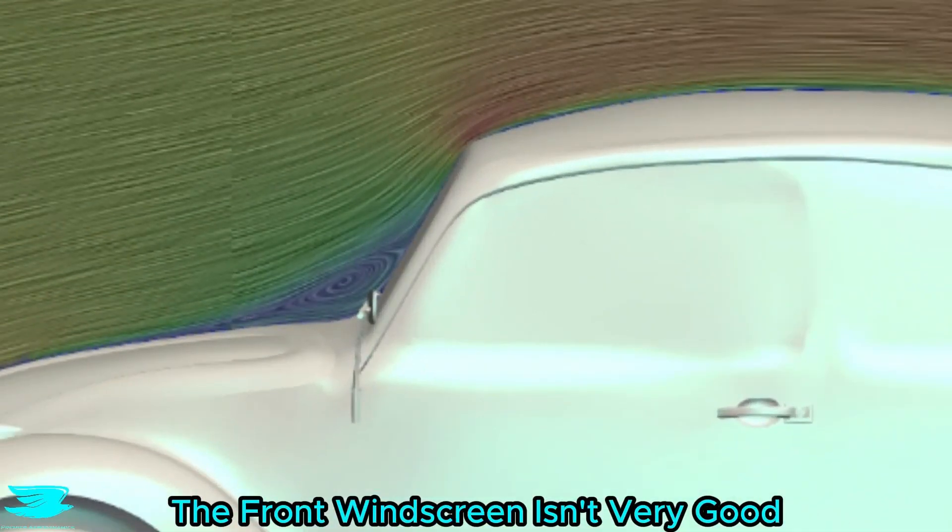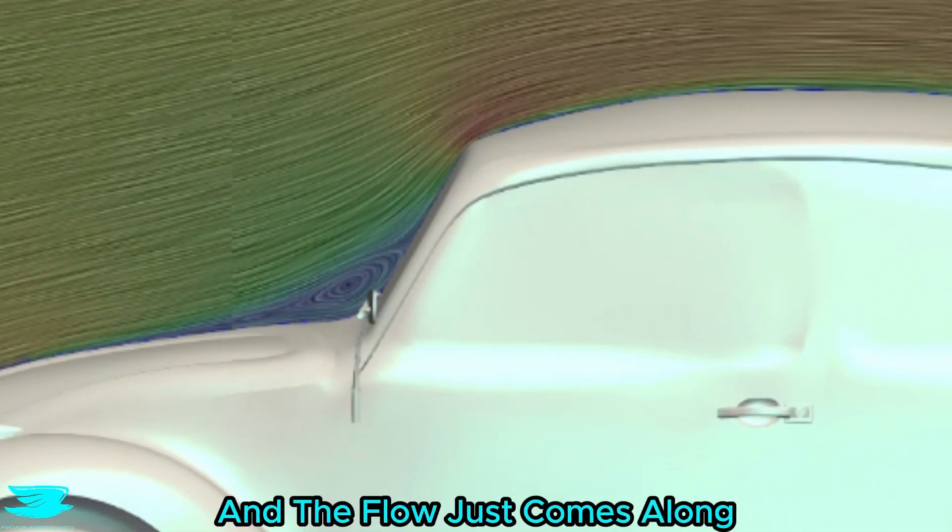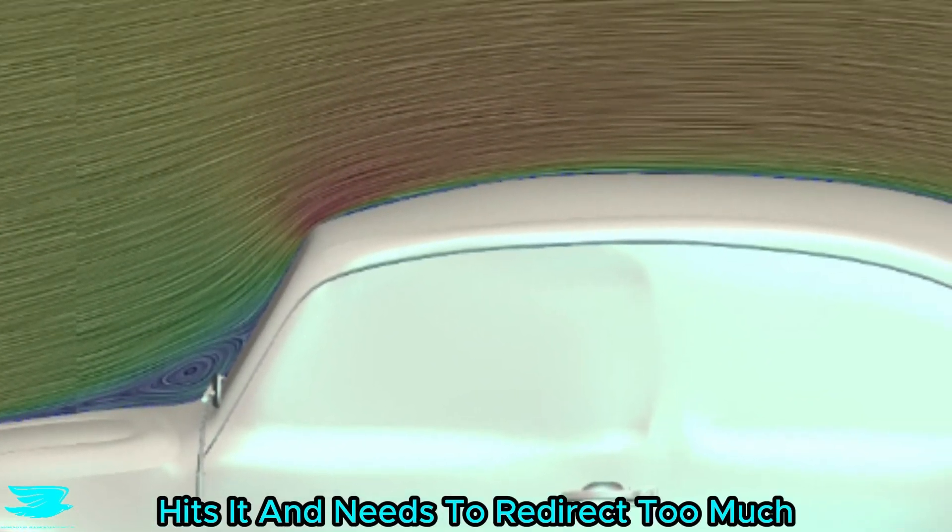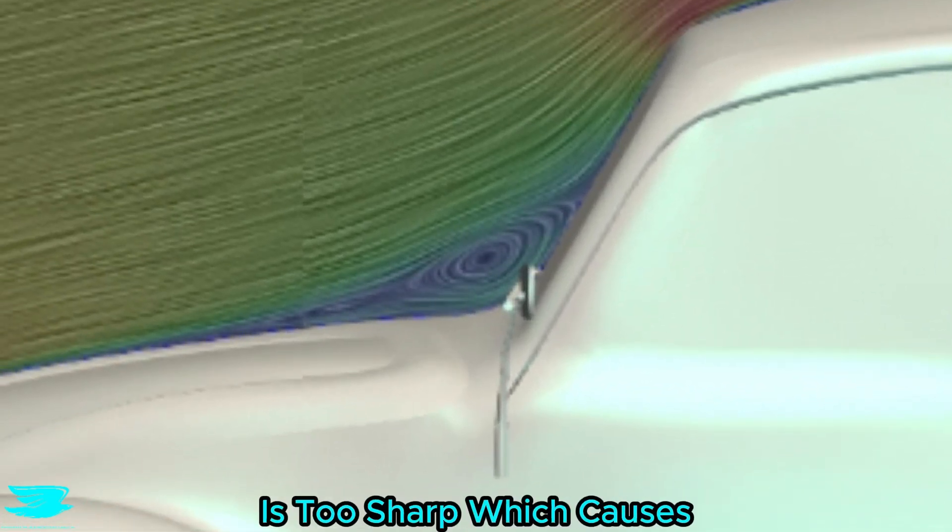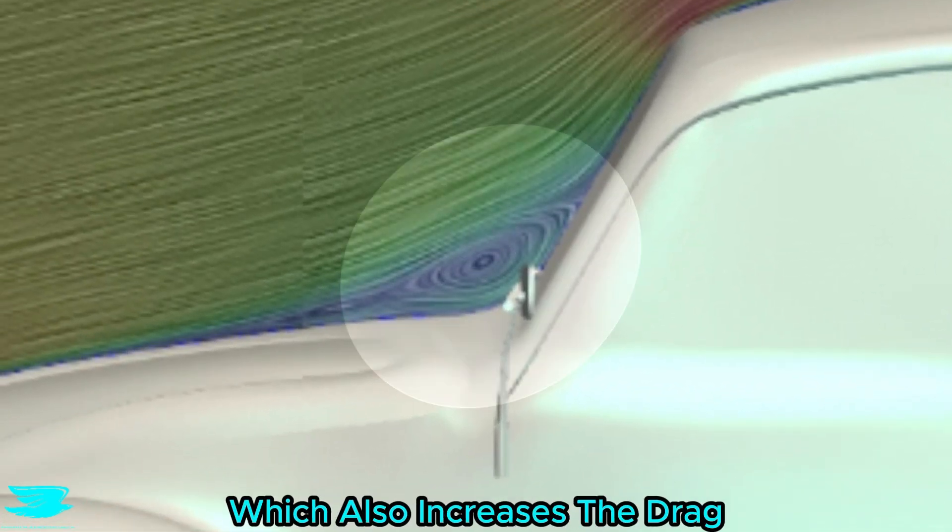The front windscreen isn't very good because it is too upright, and the flow just comes along, hits it, and needs to redirect too much. In addition, the angle between the hood and the windshield is too sharp, which causes the flow to recirculate here, which also increases the drag.